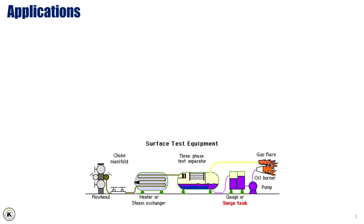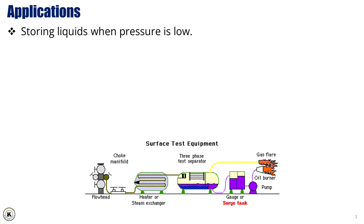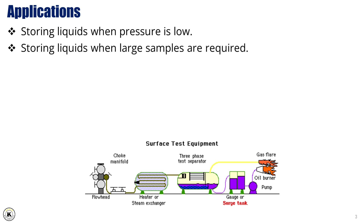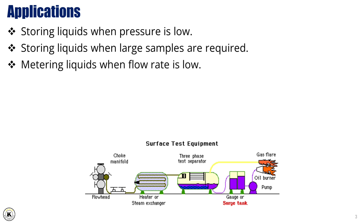Applications. The gauge tank is primarily used for storing liquids, especially in conditions where pressure is low. It also plays a crucial role when large sample volumes are required, ensuring we can handle and analyze fluids efficiently during testing. When dealing with low flow rates, the gauge tank allows us to accurately meter the liquid, providing precise data that is critical for operational decisions.